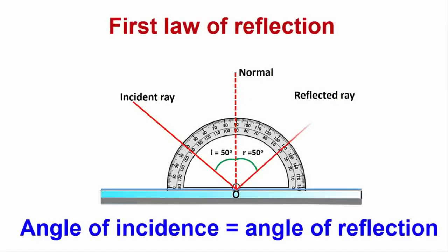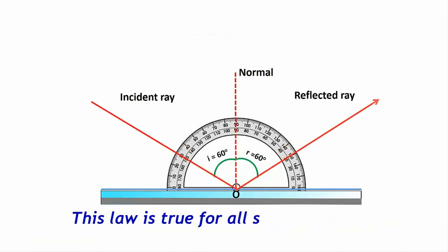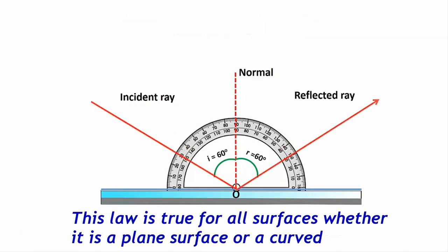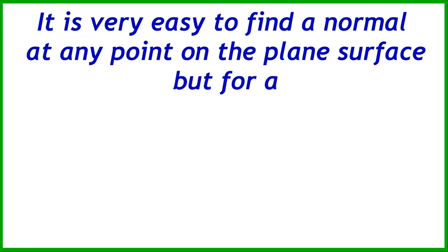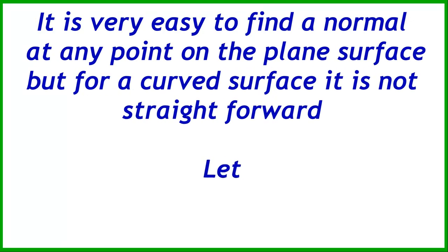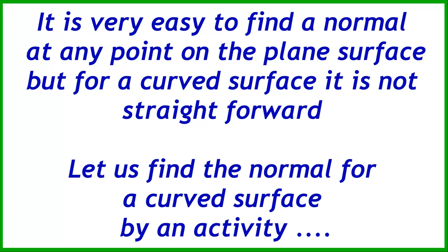We know the first law of reflection. According to that, the angle of incidence is equal to the angle of reflection at the normal. This law is true for all surfaces, whether it is a plane surface or a curved surface. It is very easy to find a normal at any point on a plane surface, but for a curved surface it is not straightforward. Let us find the normal for a curved surface by an activity.